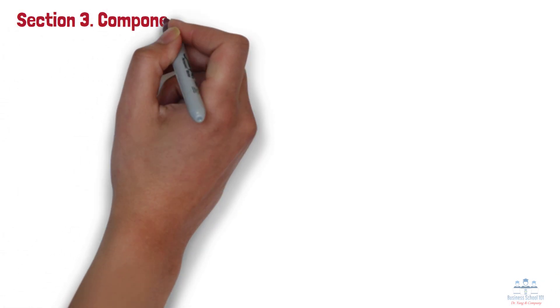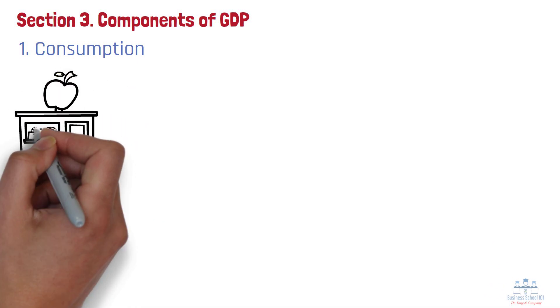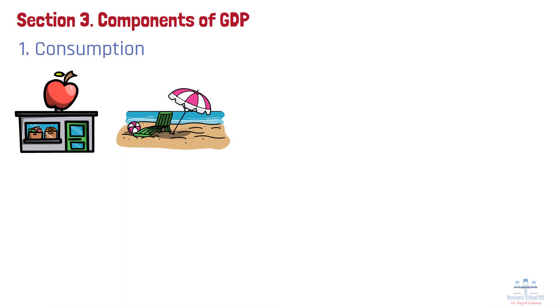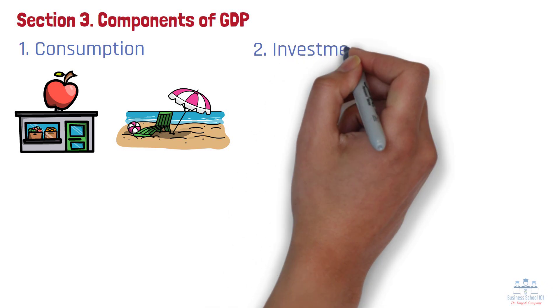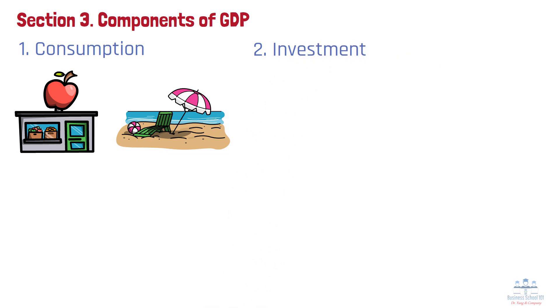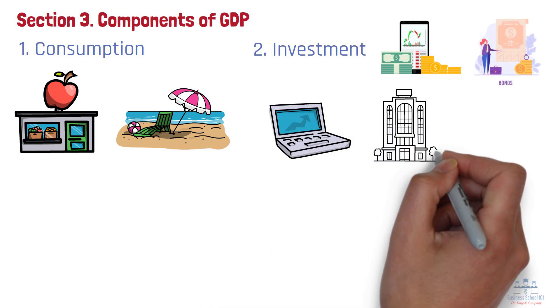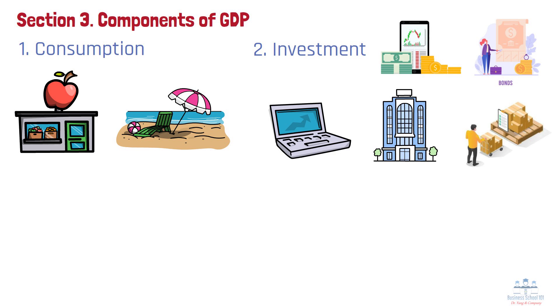Section 3: Components of GDP. Now that we know what GDP is, economists usually break GDP down into four main components. Number 1: Consumption — this is what households spend on goods and services, everything from groceries to rent to vacations. In the US, consumption is the largest component of GDP. Number 2: Investment — when we talk about investment in GDP, we're not talking about stocks or bonds. Instead, it includes business investments in equipment, buildings, and inventory, as well as residential construction.